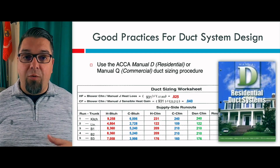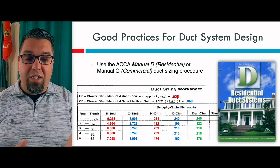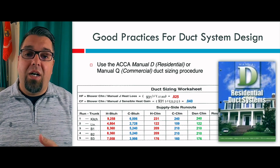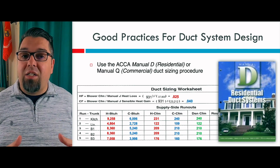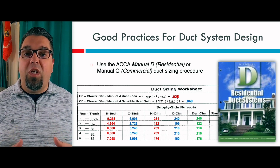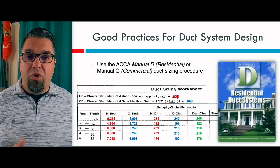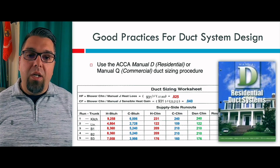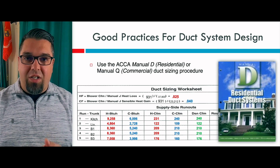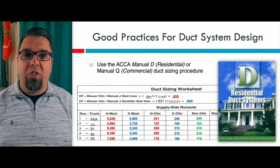You're going to use ACCA Manual D for residential duct sizing procedures. As you can see here, this is a screenshot out of one of my duct design classes — if you're an elite member on Patreon, you have access to this design class. This is a duct sizing worksheet where you walk through the heat loss and sensible heat gain for each room, figure the volume of air that needs to go to each room, and then use a duct calculator to size the runs. Those are the three basics: you've got to do the system design manuals first — it goes J, S, then D.